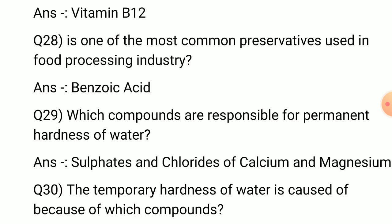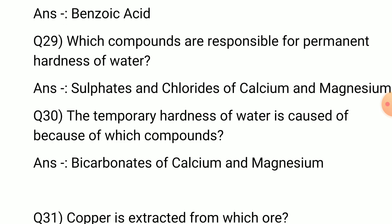Question number 26: In sunlight, chloroform is converted into which poisonous gas? Answer: Phosgene. Question number 27: Which vitamin contains cobalt? Answer: Vitamin B12. Question number 28: What is one of the most common preservatives used in food processing industries? Answer is...